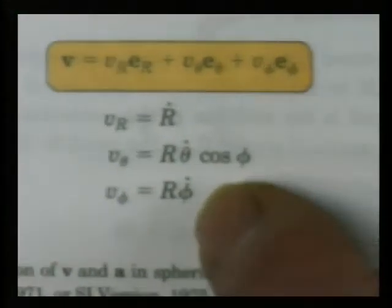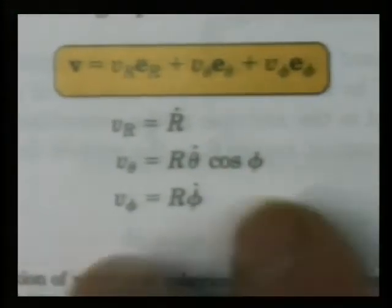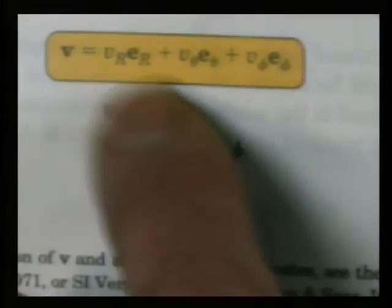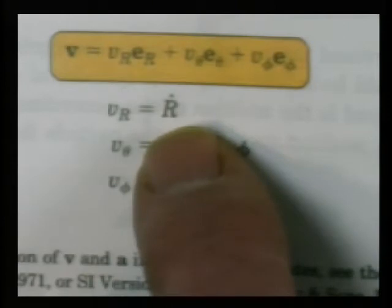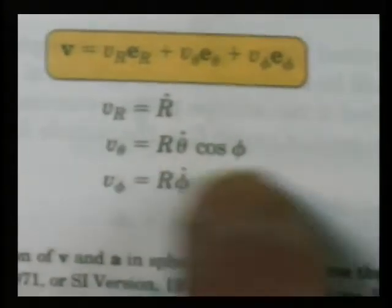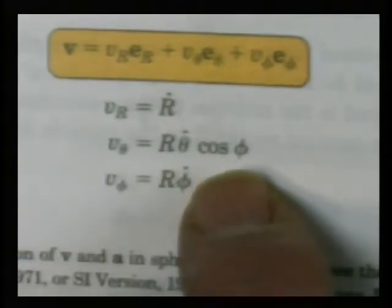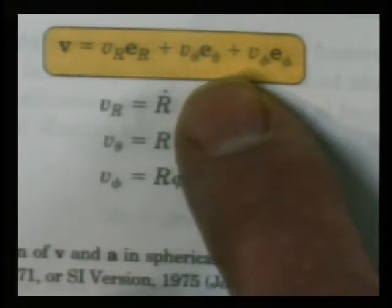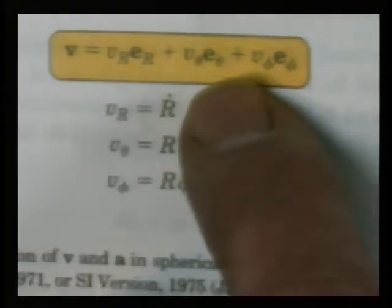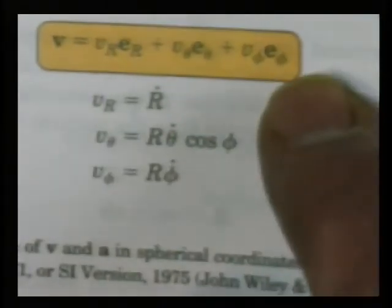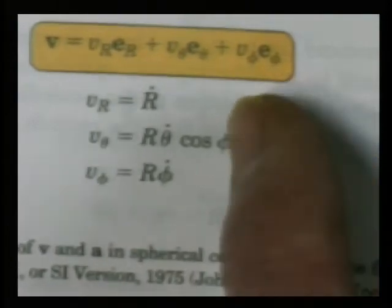It gets more interesting when you look at acceleration. You've got two time-dependent terms on your capital R term, three time-dependent terms on the theta term plus the unit vector which changes direction with time — so there are four terms involved in the theta derivative. And on the phi term there are two terms plus your phi hat, so three terms. When you crank the derivatives to work up your acceleration, it gets quite complex.